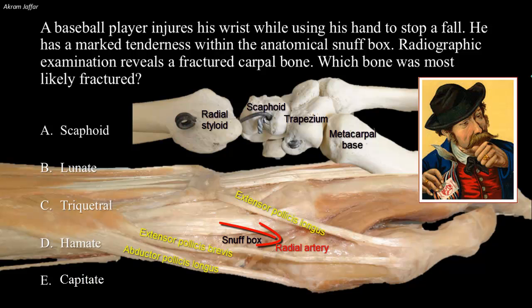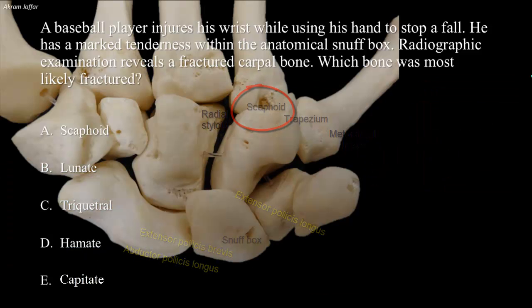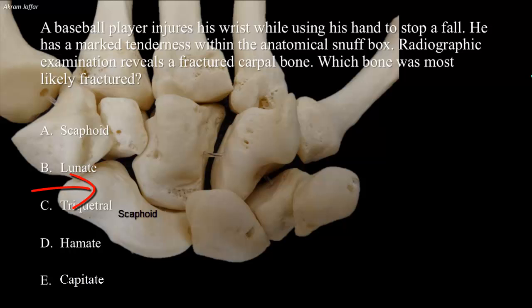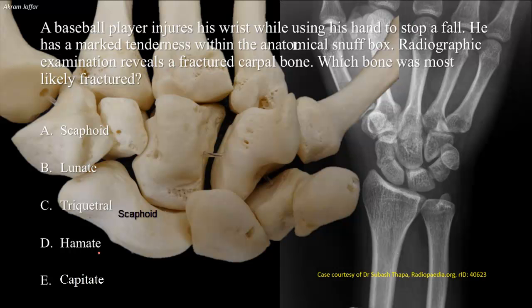Tenderness in the snuff box is an important sign of fracture of the scaphoid. The scaphoid has a prominent scaphoid tubercle, which is a blunt prominence to the thumb side of the distal skin crease of the wrist, and it is palpable. The scaphoid is the largest bone in the proximal row of the carpal bones and is the most frequently fractured carpal bone.